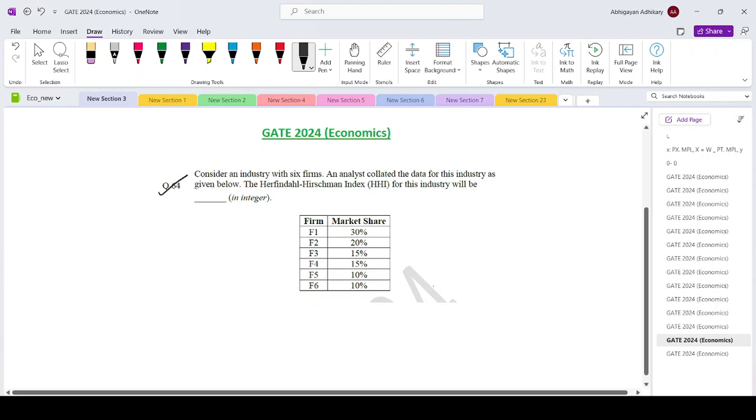Consider an industry with six firms. An analyst collated the data for this industry as given below. The Herfindahl-Hirschman index for this industry will be how much?